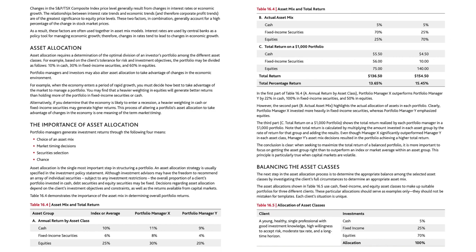Interest rates are used by central banks as a policy tool for managing economic growth; therefore changes in rates tend to lead to changes in economic growth. Asset allocation requires a determination of the optimal division of an investor's portfolio among the different asset classes. For example, based on the client's tolerance for risk and investment objectives, the portfolio may be divided as follows: 10% in cash, 30% in fixed income securities, and 60% in equities.